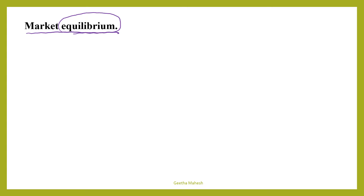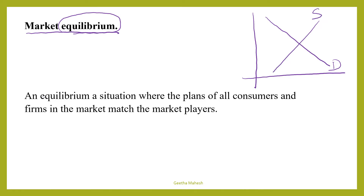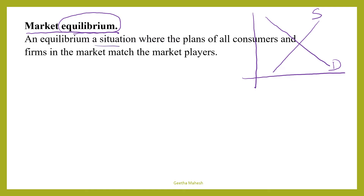What do you mean by equilibrium? It is a situation or a state of rest where there is no tendency to change from that state. That position we call it as equilibrium. Then what do you mean by market equilibrium? It is a situation where the plans of all consumers and firms in the market match with the market players.